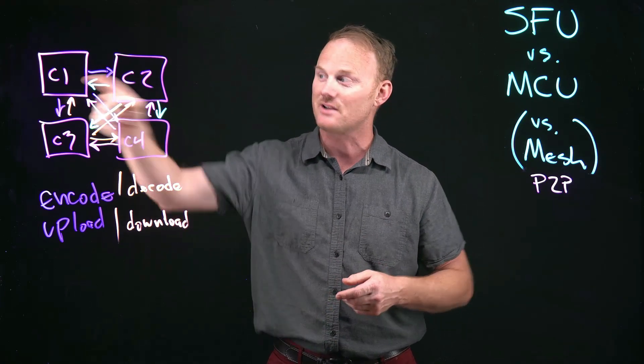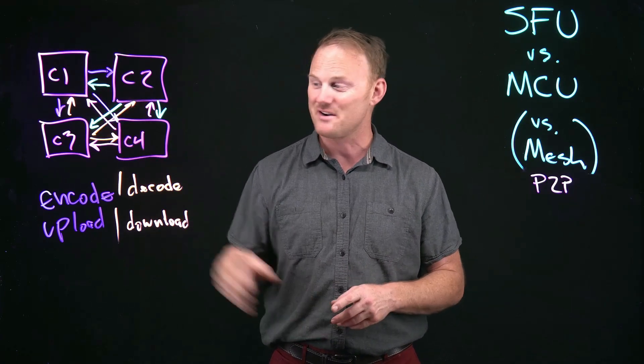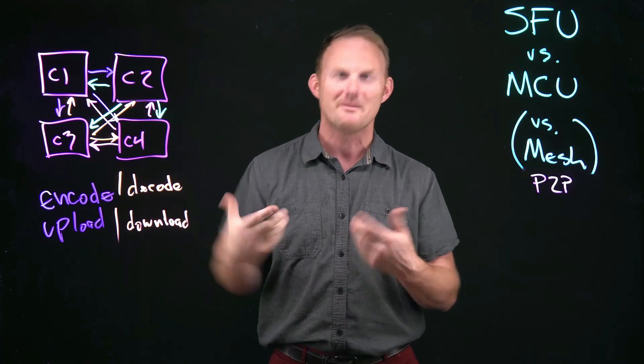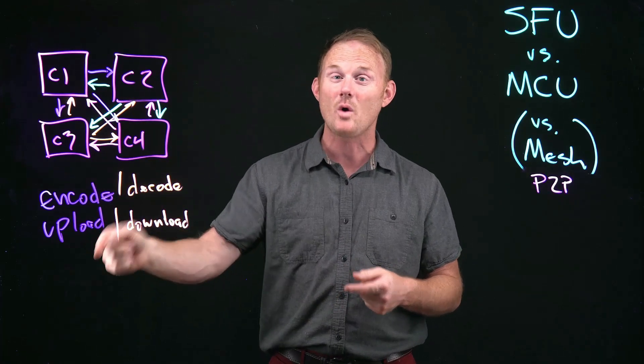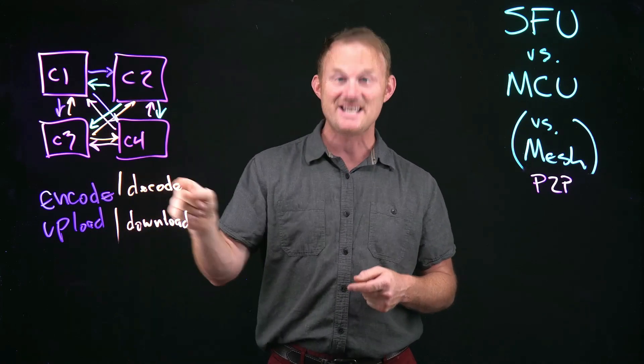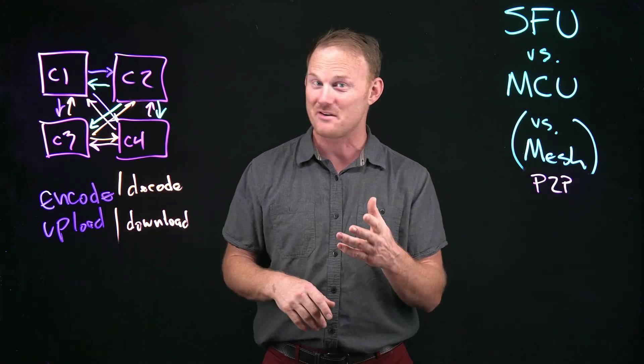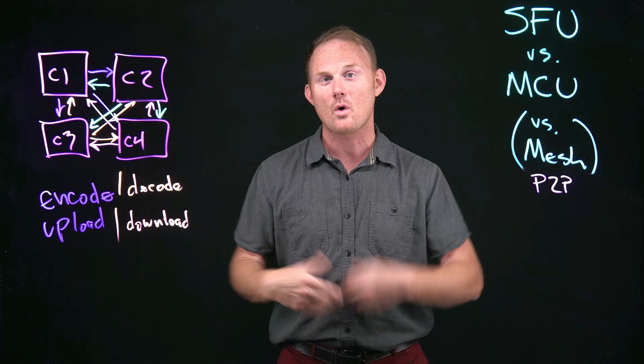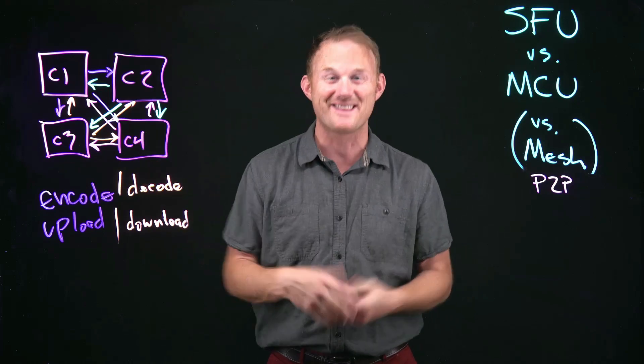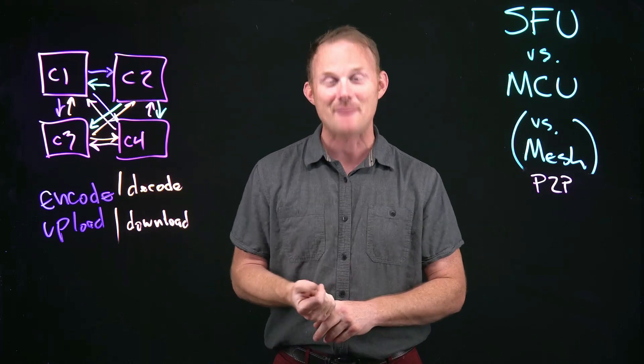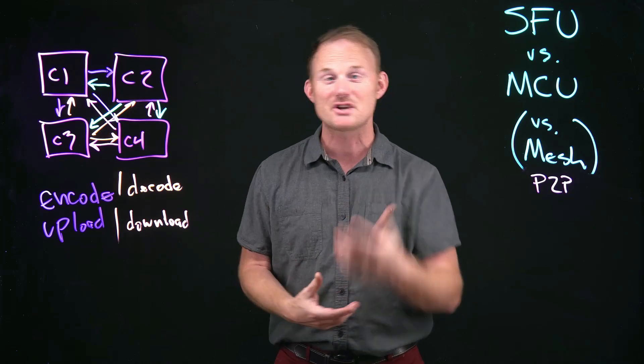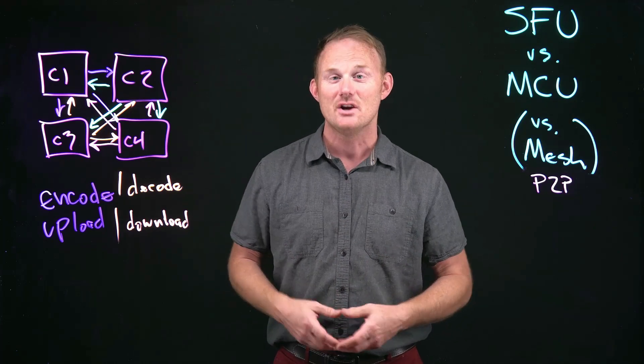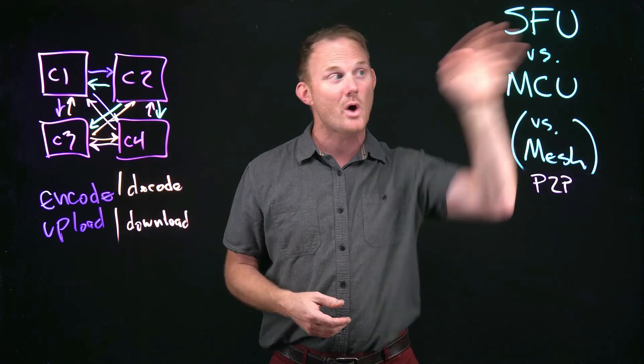If you have a thousand clients, that means client one is going to have 999 different encode, maybe not 999, but potentially, and it's going to have to upload all 999 of those going to have to decode every single one of them 999 times and download all of them in real time. It won't work. There's no way even a good laptop is not going to be able to manage, like I said, more than five or six. If you have an unstable internet connection or a phone, it's going to be less than that. So what do we do? What are our options?